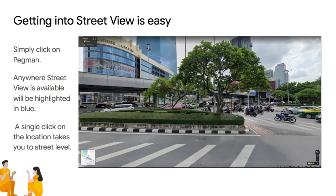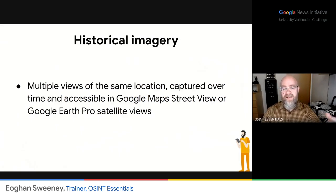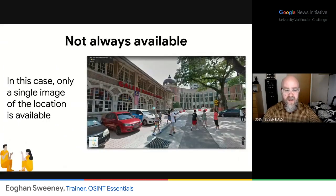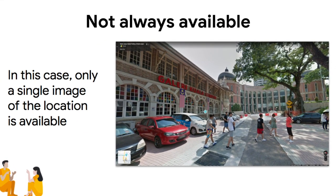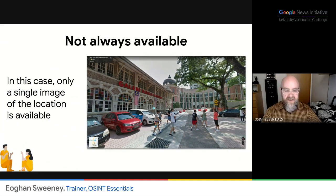And then you'll get a view like this. Historical imagery is the same thing, except that you will get multiple views of that area captured over time, because the Google Street car or whatever camera they use will have passed along many areas more than once. They don't dump the old imagery — they actually keep them in the application. It's not always available, because they don't always have multiple imagery of the same spot. In this case, there's only a single image.